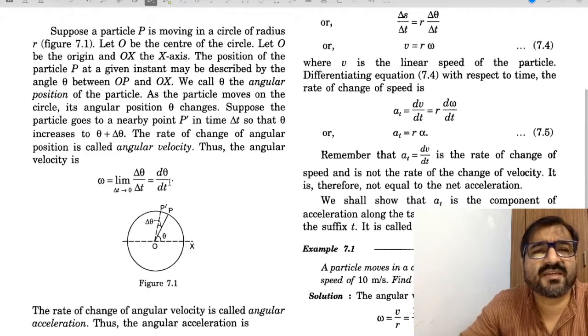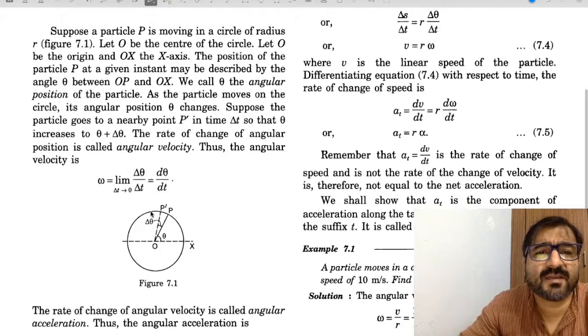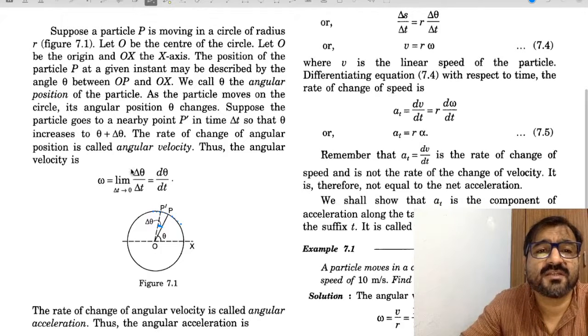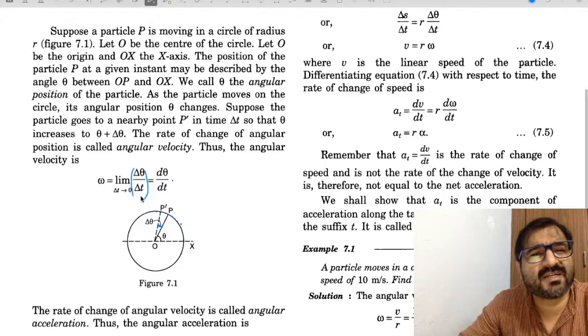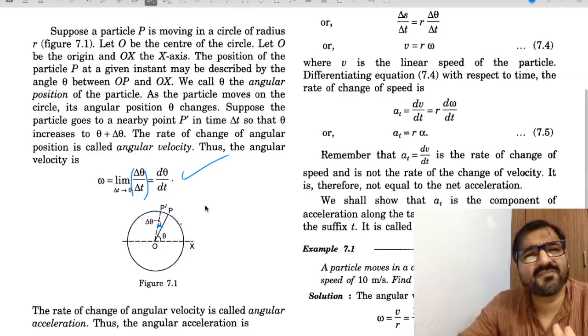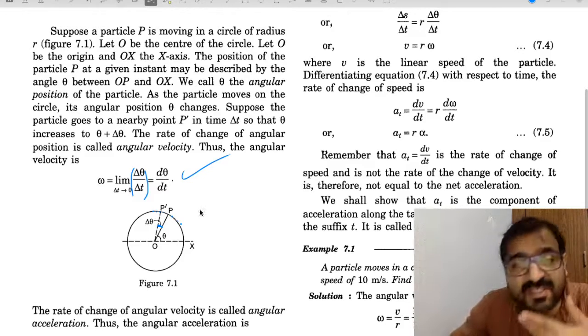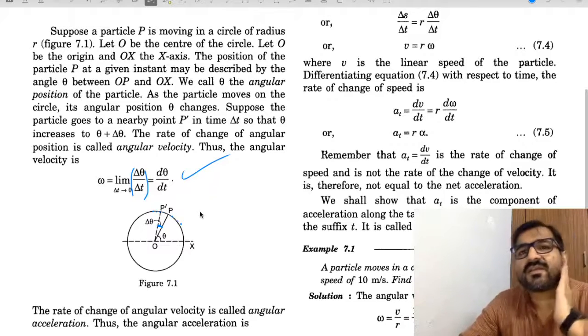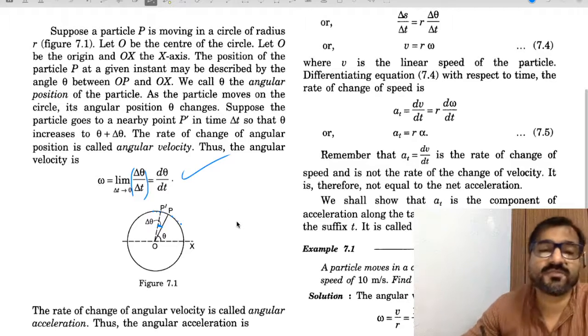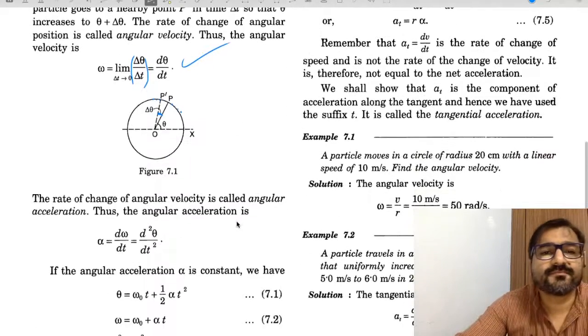Basically, this is how it is - there is a circle and a particle. It has covered the delta-theta angle. What will be the angular velocity? Delta-theta by delta-t. Limit delta-t approaches 0, that is d-theta by dt. This is angular velocity. This will be covered in more detail when we talk about rigid body.